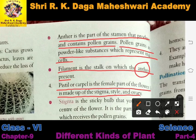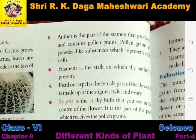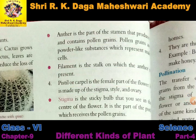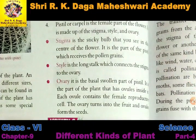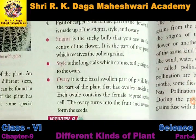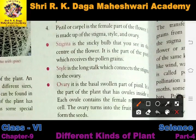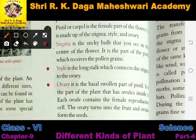So the flower has two parts — male and female. The male part includes stamen and anther. The female part includes stigma, style, and ovary. Now let us look at stigma, style, and ovary in detail — what does each one mean.